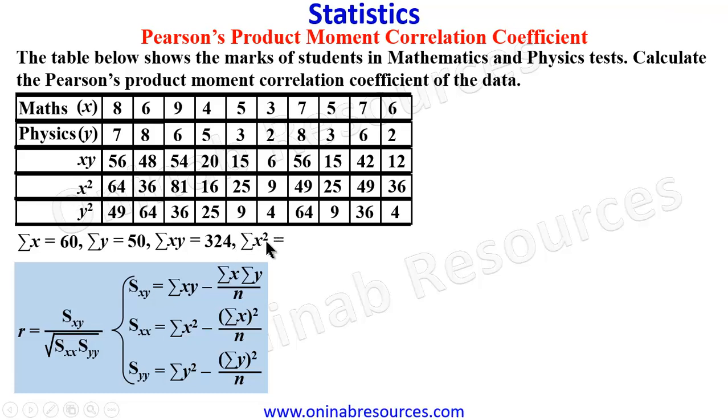Then X squared, summing up all the X squares, we have 390. And finally, Sigma Y squared, summing up all the Y squared, we have 300.